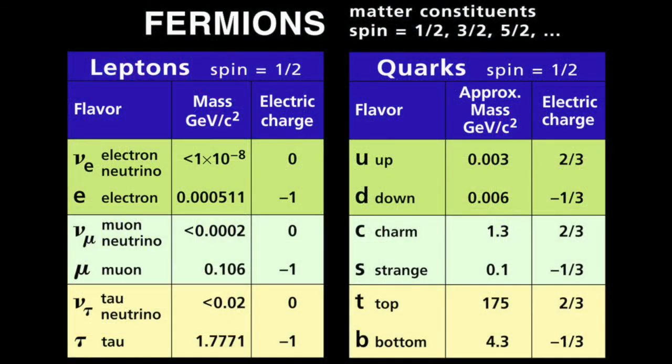Both leptons and quarks are fermions, which means that they have half-integral spin and they obey Fermi-Dirac statistics. Bosons, on the other hand, such as the photon, have integral spin and obey Bose-Einstein statistics.